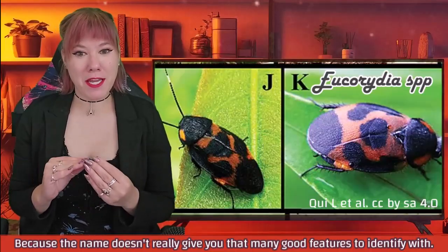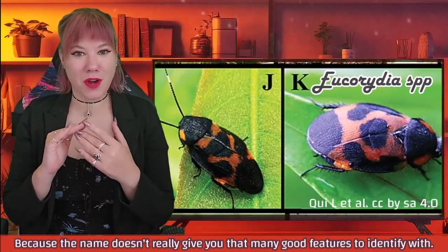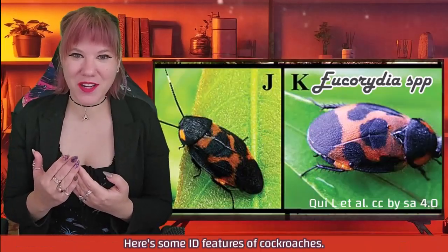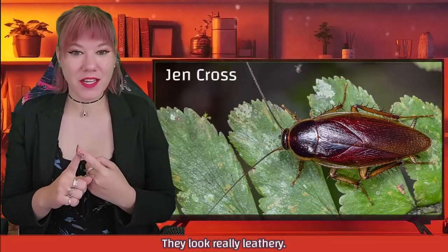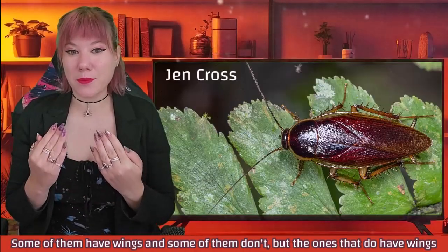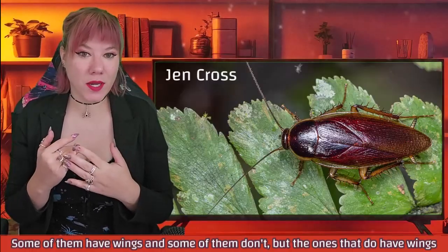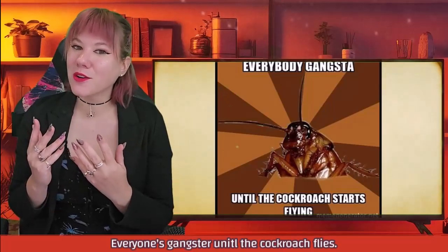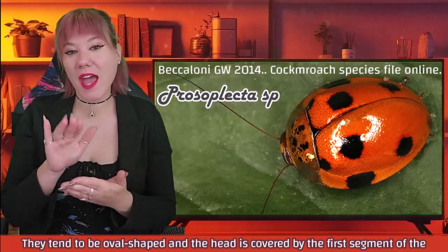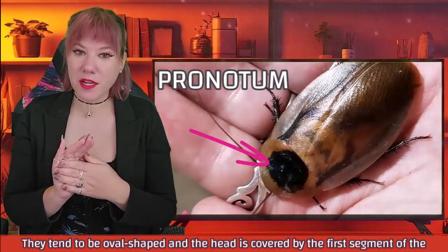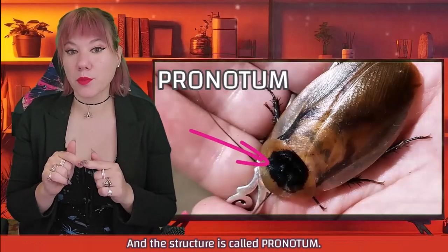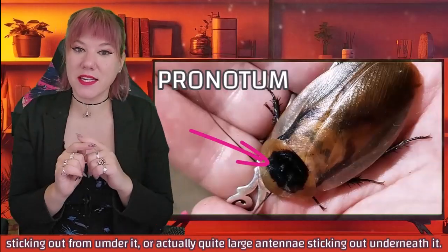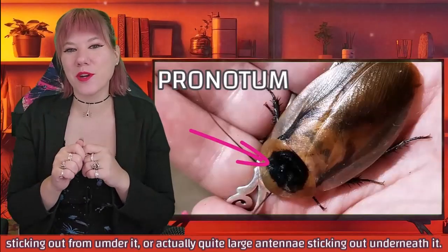Because the name doesn't really give you that many good features to identify with, here are some ID features of cockroaches. They look really leathery. Some of them have wings and some of them don't, but the ones that do have wings are really leathery. And my favorite meme — everyone's gangster until the cockroach flies. They tend to be oval-shaped, and the head is covered by the first segment of the thorax, and this structure is called a pronotum. You can really only see the top of the thorax and quite large antennae sticking out from underneath it.